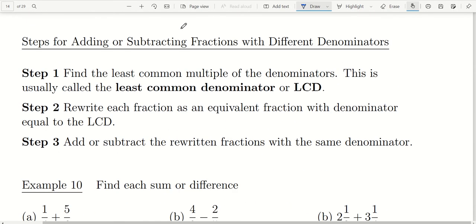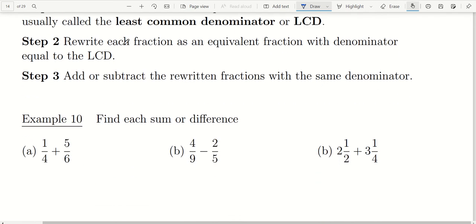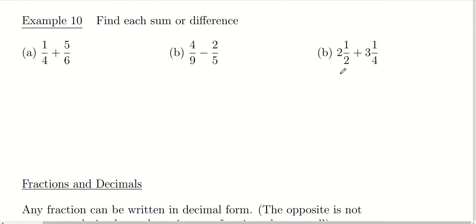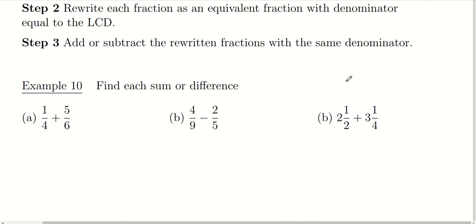We're now going to investigate what happens when we add or subtract fractions with different denominators. The first step is to find a common denominator — specifically, the least common denominator, which is equivalent to the least common multiple. We then rewrite each fraction as an equivalent fraction whose denominator equals the LCD, and once we have that common denominator we can add or subtract. Always simplify at the end if needed.